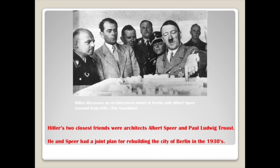Hitler thought himself an artisan — he actually started in art school in Vienna — and his closest friends were architects Speer and Troost. He and Speer actually came up with a joint plan for rebuilding the city of Berlin in the 1930s along a strong central axis, using some of those functional zoning ideas that Le Corbusier had put forward.